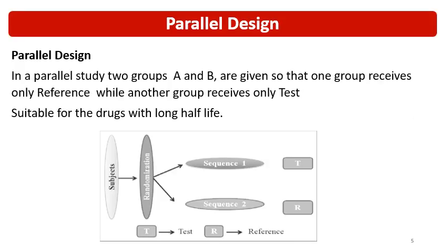The second design is parallel design. In this, 100 subjects are divided into two groups of 50 — group A and group B — but there is no crossover. Group A receives only the test, and group B receives only the reference, and the study runs in parallel. Parallel design is less time consuming because it does not involve a washout period, and it is suitable for drugs with a long half-life — considered as half-life above 30 hours or more.